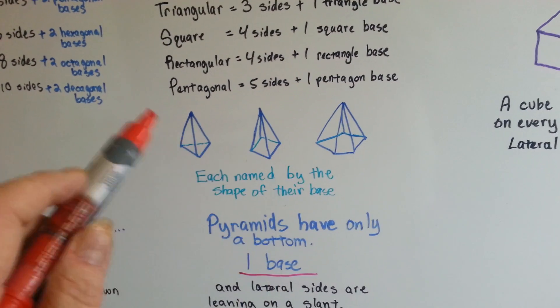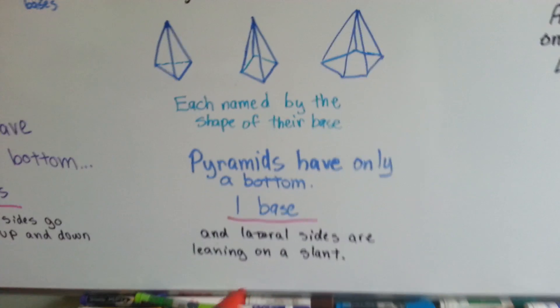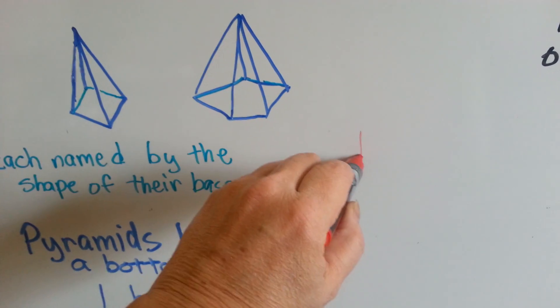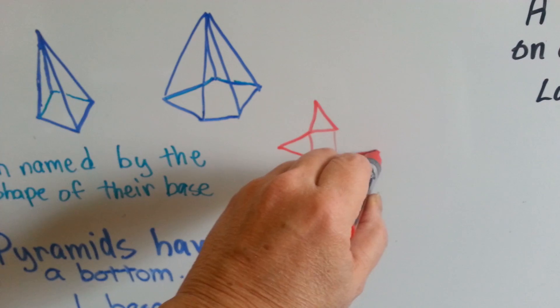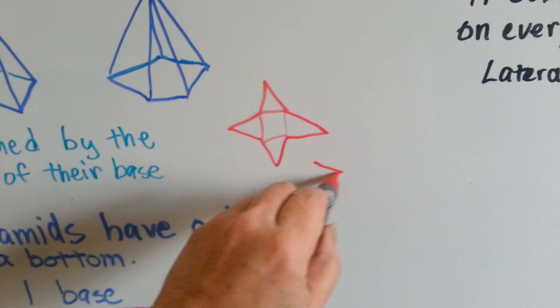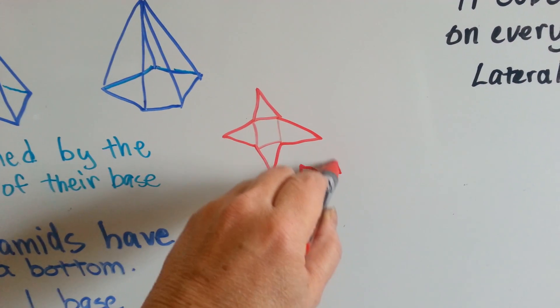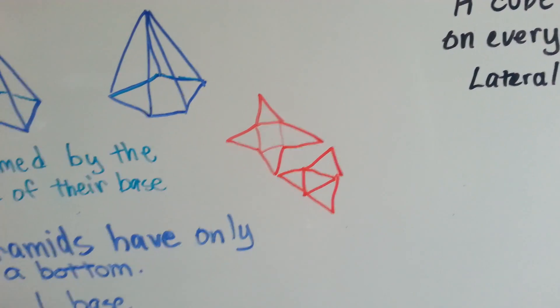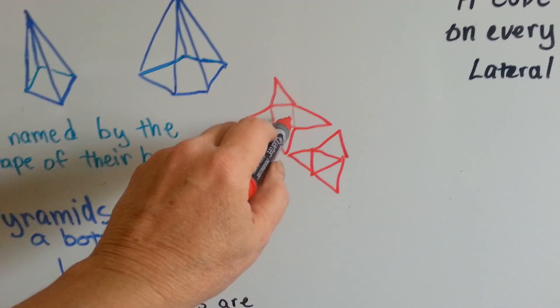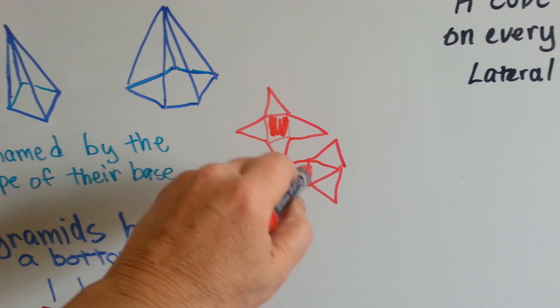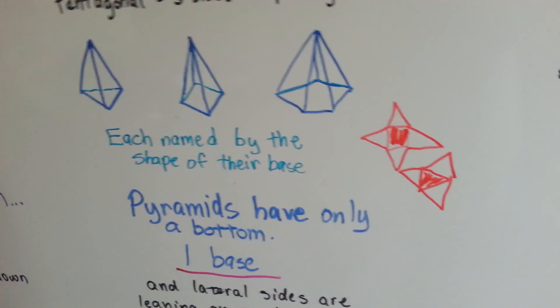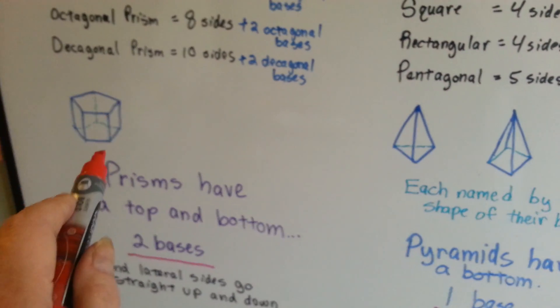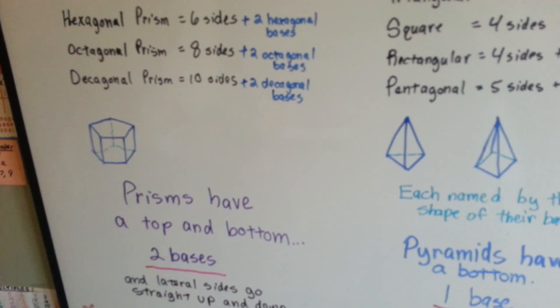If you were to open a pyramid up and unfold it, a square pyramid would look like this. A triangular pyramid would look like this. Here would be the base, but all the sides are triangles. Where with the prism, all the sides are rectangles.